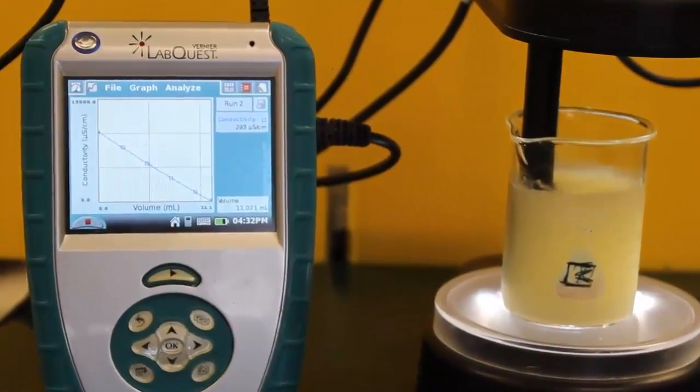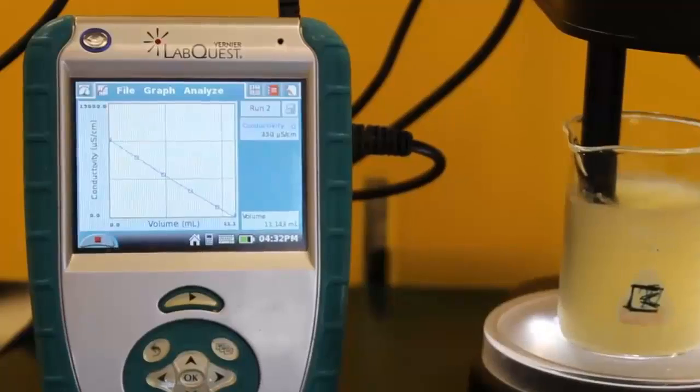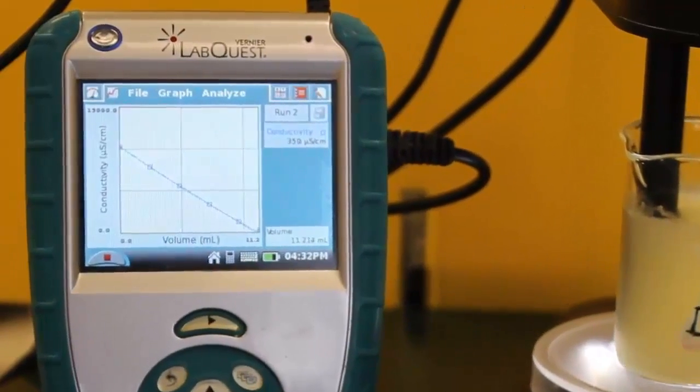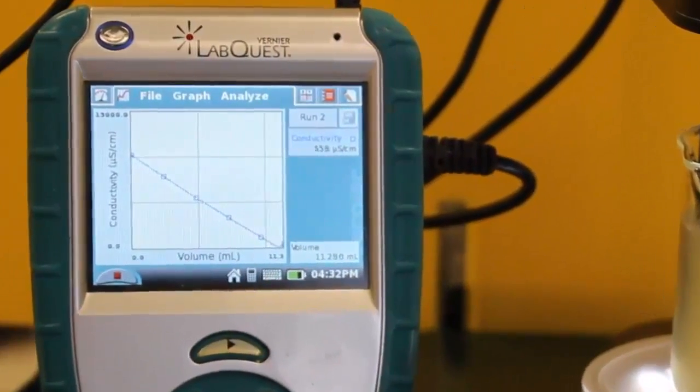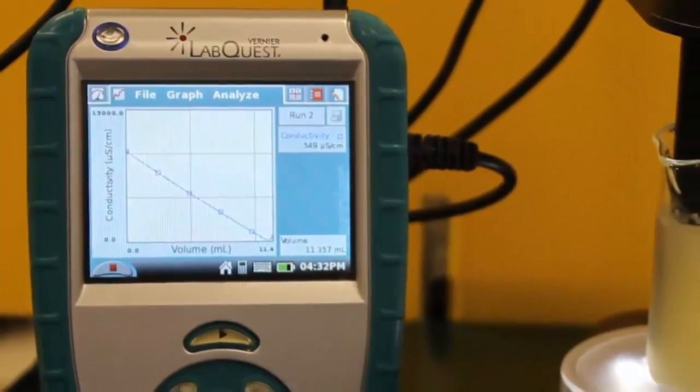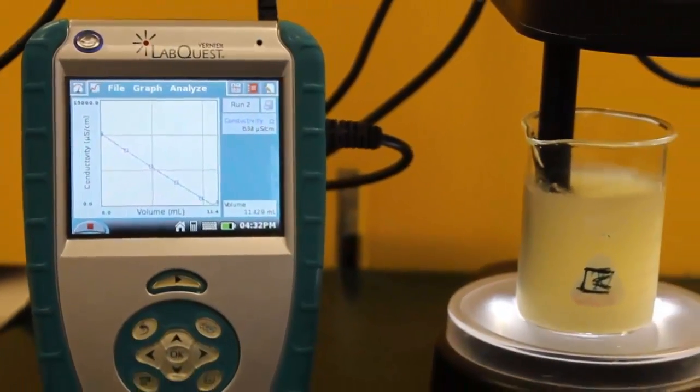Also notice on the Lab Quest you can see that the conductivity of the solution has started to increase, indicating we have passed the equivalence point. We'll keep adding the sulfuric acid solution drop by drop, always carefully measuring the volume.